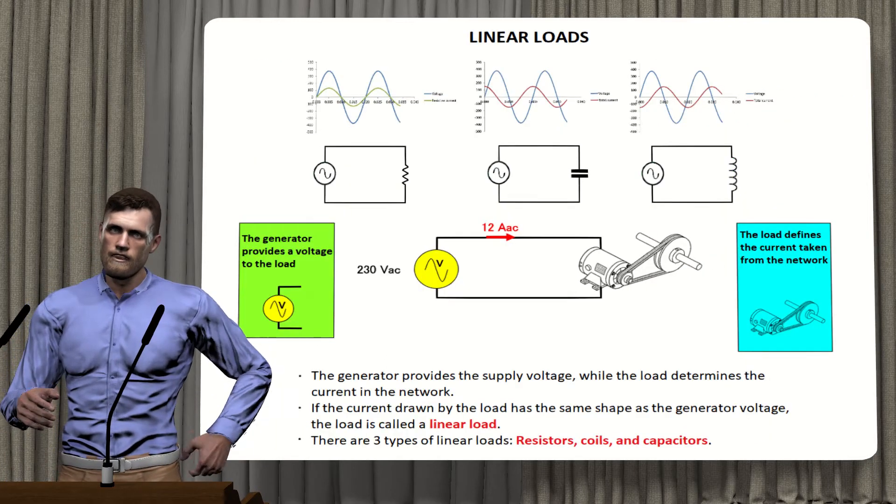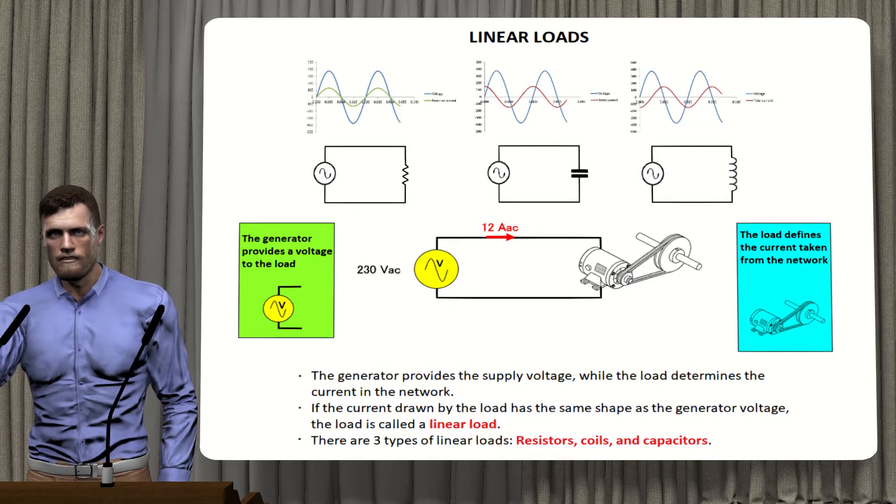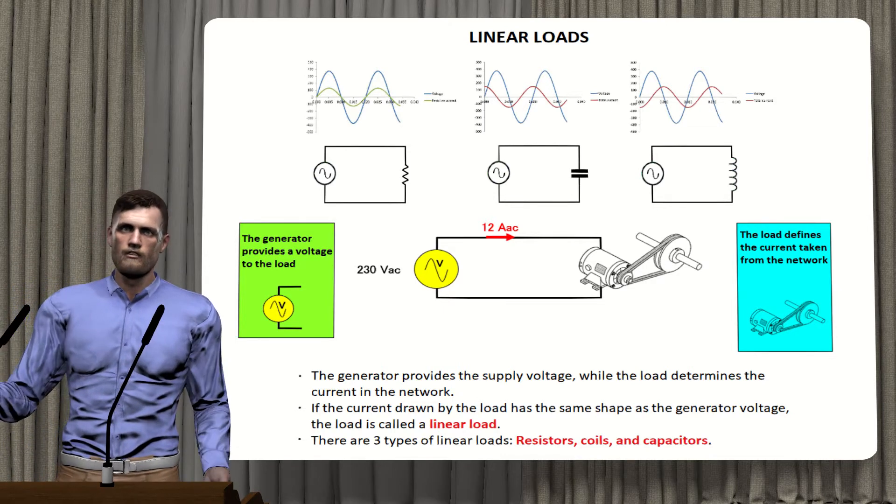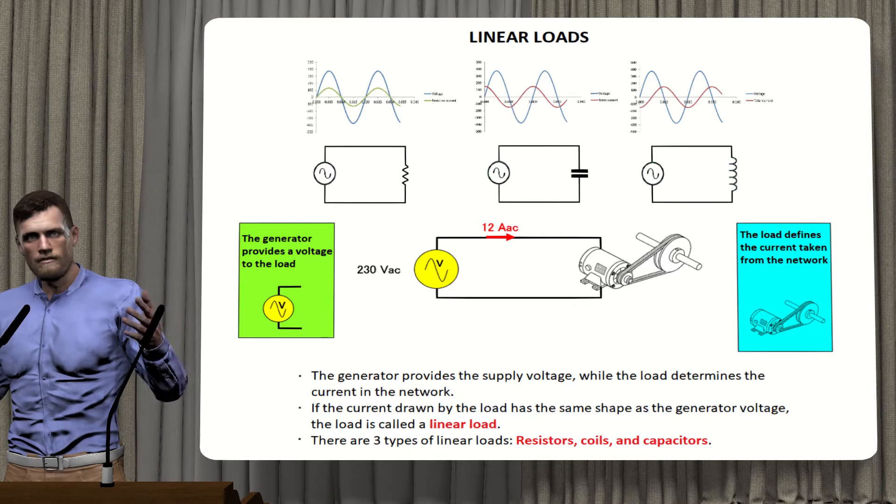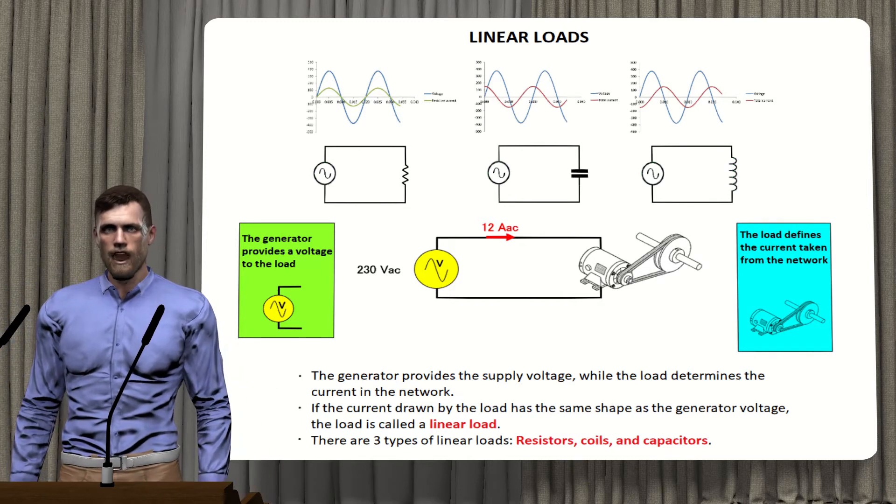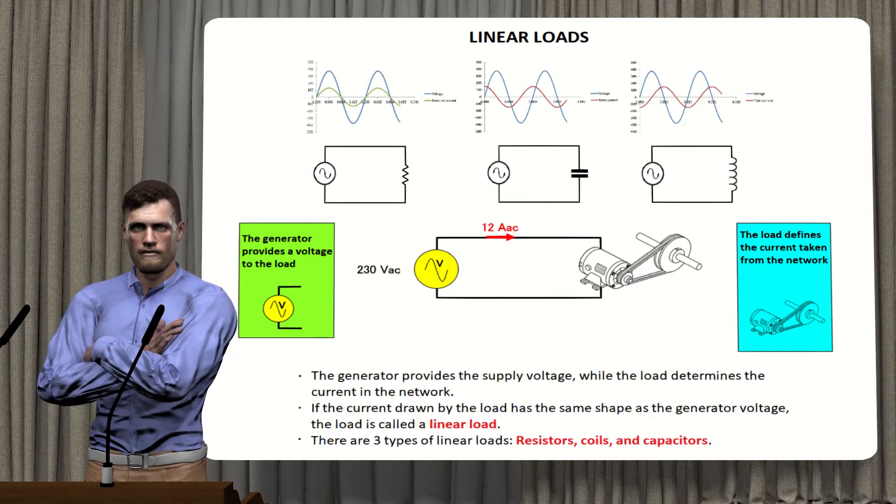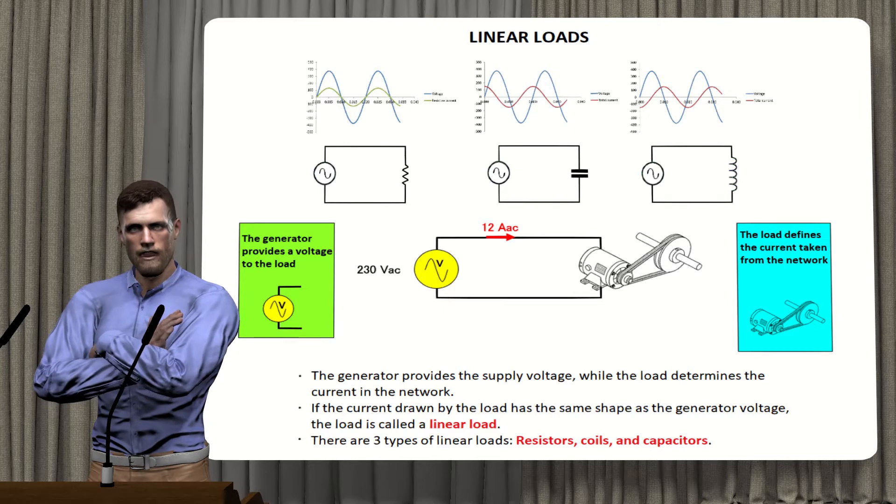The loads that are connected to the electrical network can be divided into linear loads and non-linear loads. Linear loads such as coils in motors, resistors and capacitors, when powered with a sinusoidal voltage waveform, give rise to sinusoidal currents, although there may be phase shifts between voltage and current giving rise to reactive powers.